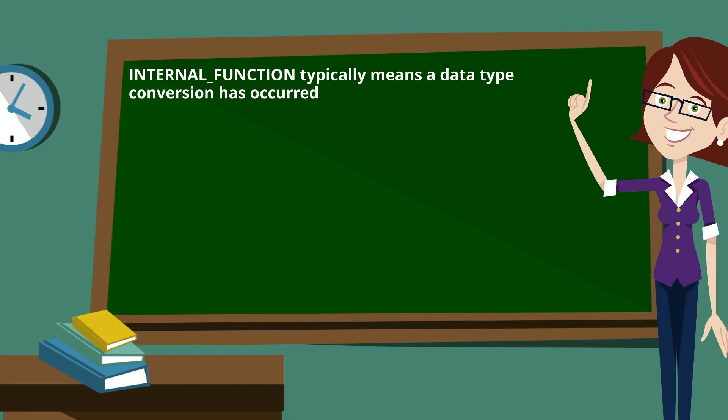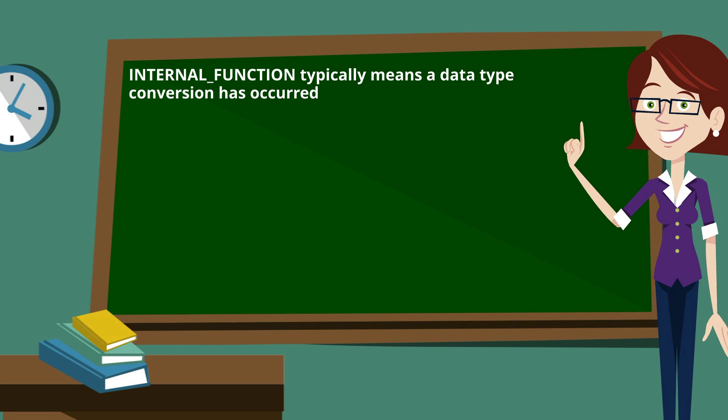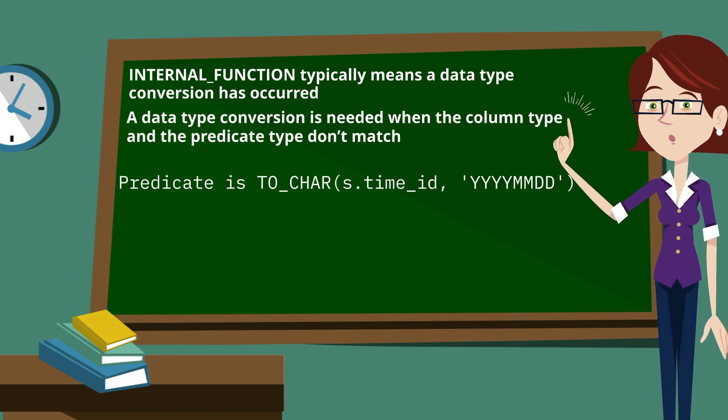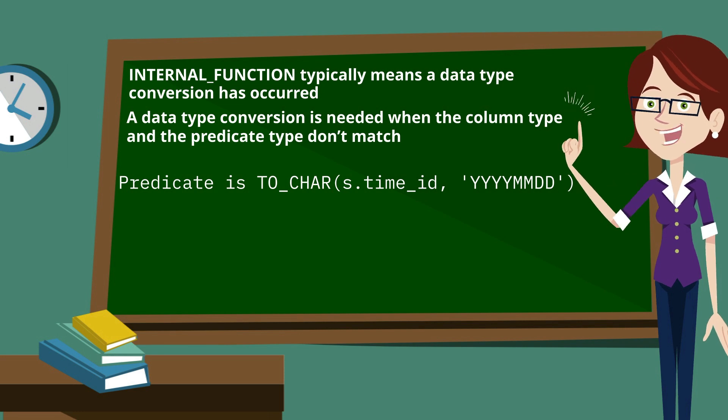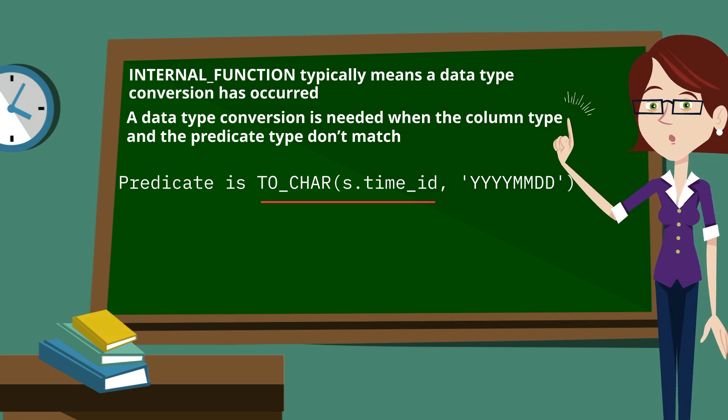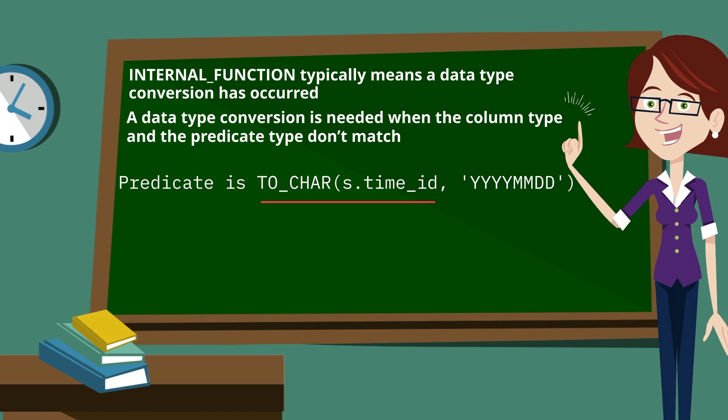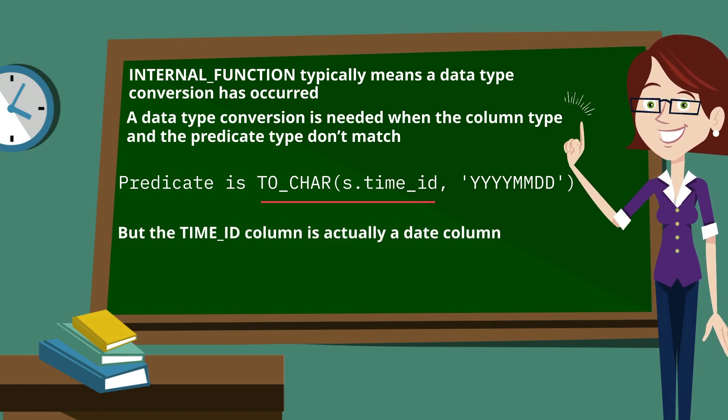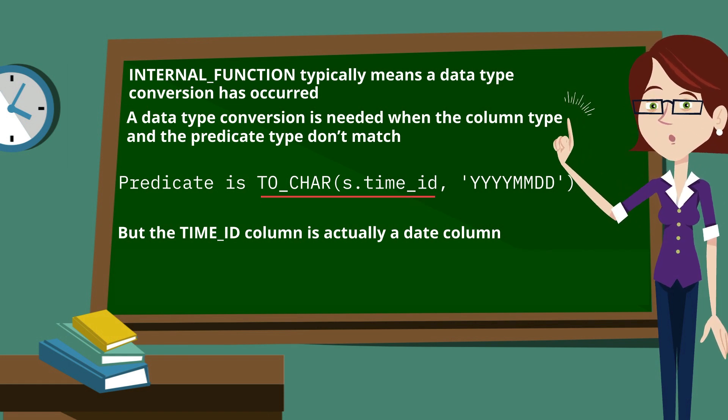Well, the internal function call typically means a data type conversion has occurred. A data type conversion is needed when the column type and the predicate type don't match. So in our example here, our predicate has a to_char on the time_id column. That time_id column is actually a date, and we're trying to compare it to a string, so we need to do that character conversion.